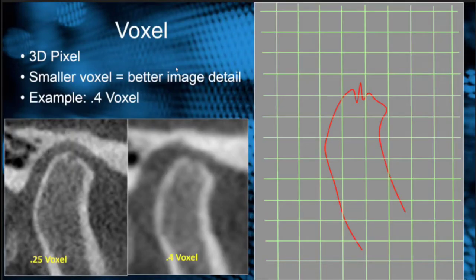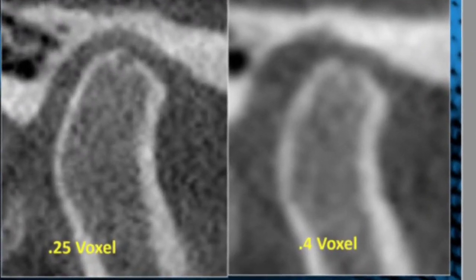If we take these two scans together, we can see that the 0.25 voxel has much better detailed information that we can see compared to the 0.4 voxel. There seems to be some change in the jaw joint that we can see better and more detailed in the 0.25 voxel.